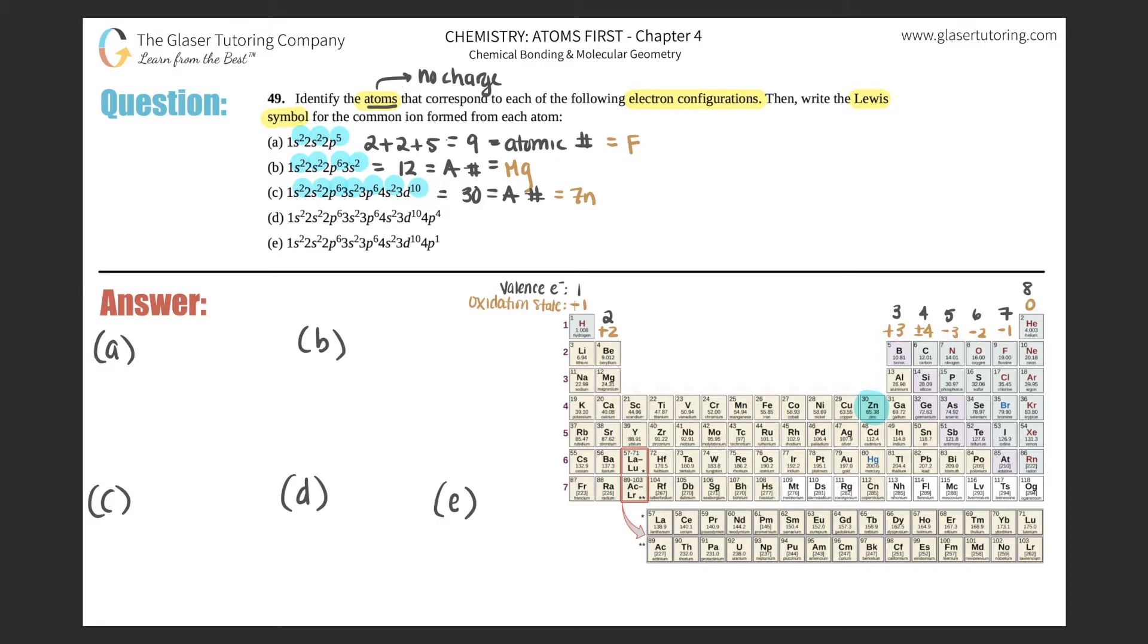For letter d, we would do 2 plus 2 plus 6 plus 2 plus 6 plus 2 plus 6 plus 2 plus 10 plus 4. So when we do that, it basically would be the 30 from before because it looks like all those numbers are exactly the same. So this would actually turn out to be 34, and that's the atomic number for that atom. And if we scan for number 34, we should come up with selenium.